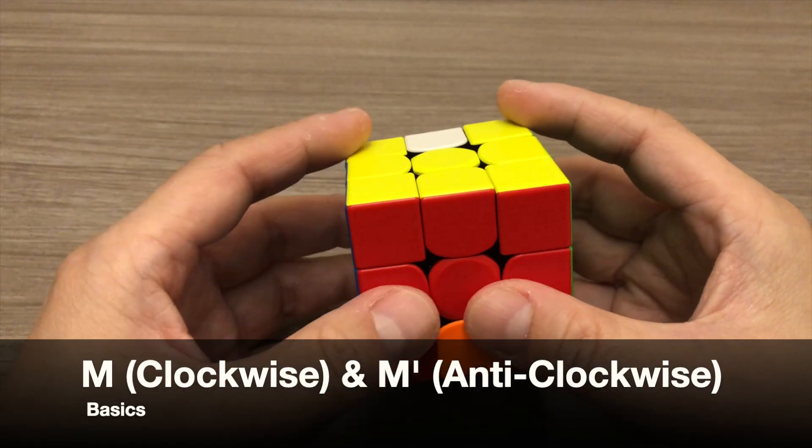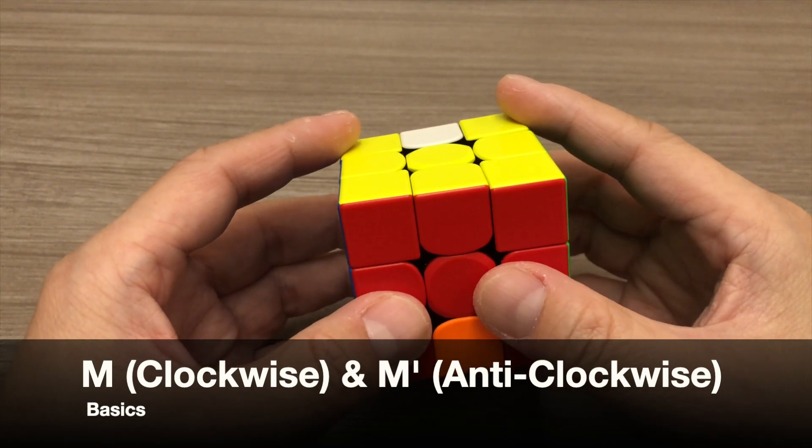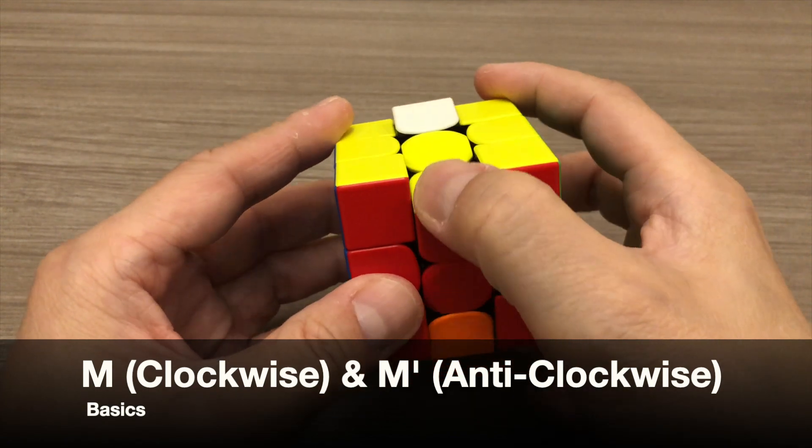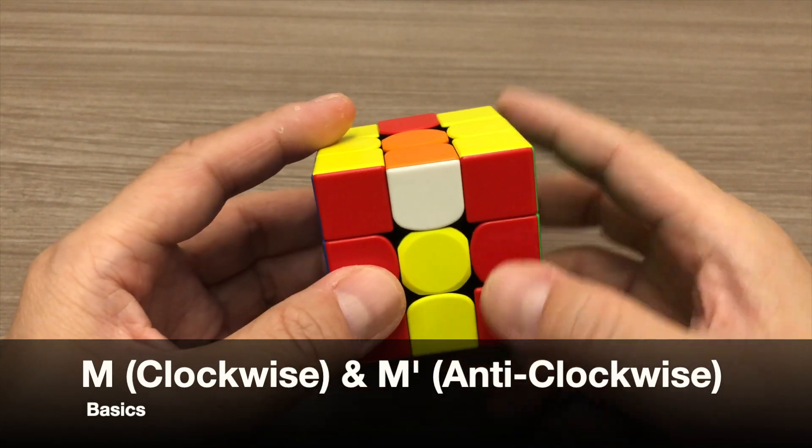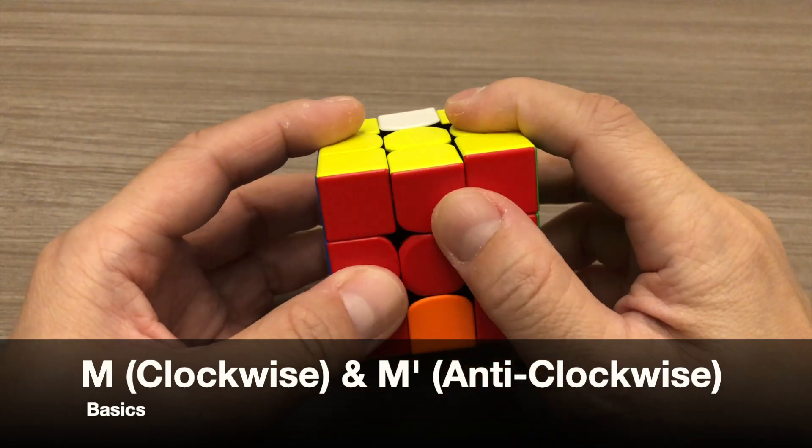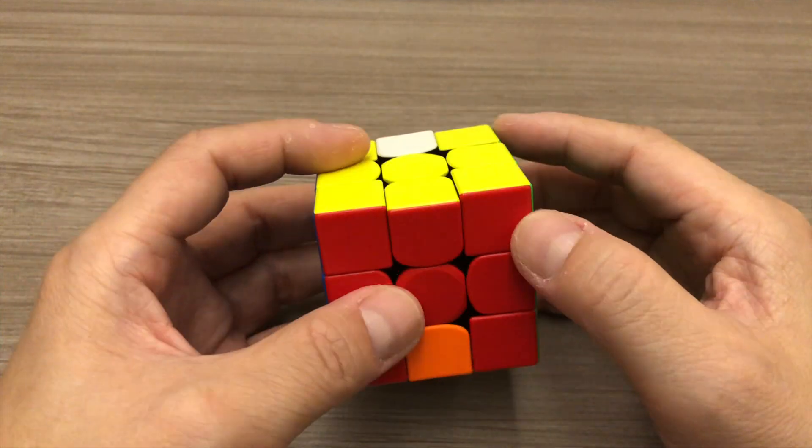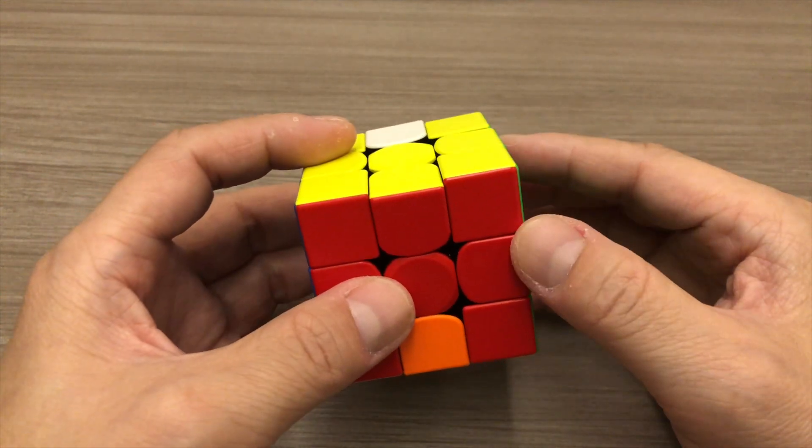So to recap, for M, you will rotate the middle vertical slice layer clockwise. And for M' you will rotate it anticlockwise. This is it for the basics. If you are ready, let's do some cubing.